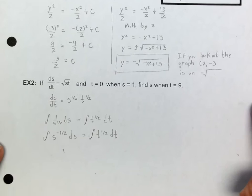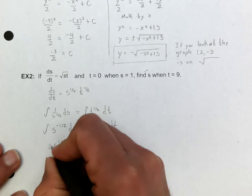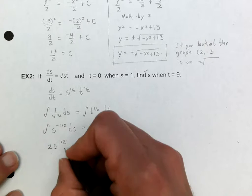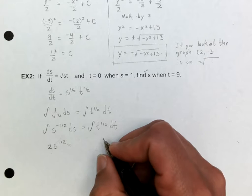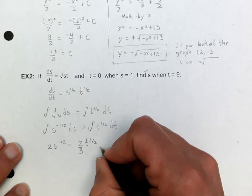Integrating both sides: on the left, adding one to the exponent gives s to the one-half, and dividing by one-half is the same as multiplying by 2, so I get 2s to the one-half. On the right, adding one to the one-half exponent gives three-halves, and dividing by three-halves is multiplying by two-thirds, giving two-thirds t to the three-halves plus c.